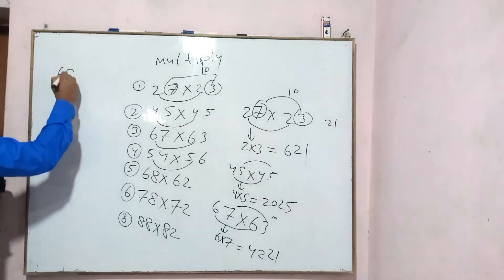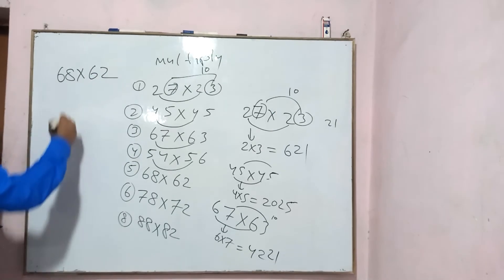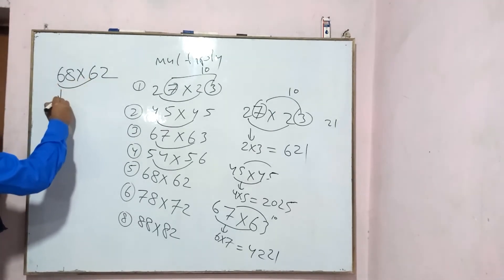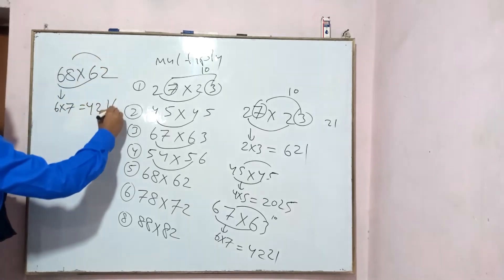Like 68 into 62. Same thing. You can see 6, 6, 7, 42. This is multiply. 16.